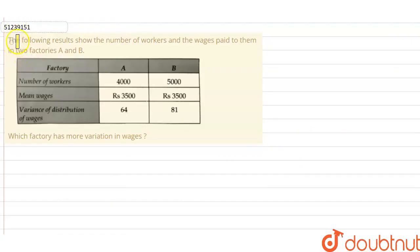Hello friends, what was asked in this question? The following result shows the number of workers and wages paid to them in two factories A and B. You have two factories A and B.